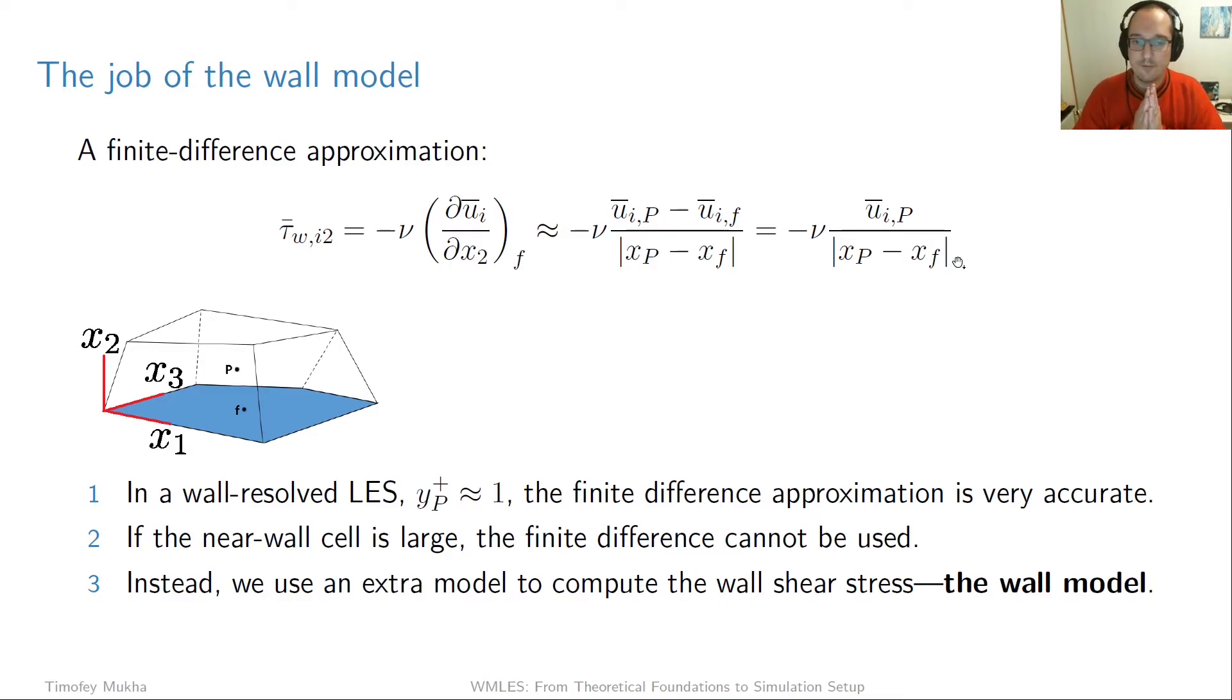So this works great when you're doing a conventional wall resolved LES. Why? Because then your grid is adapted to the inner length scales and the height of this first cell center should be approximately y plus 1. What that means is that you are in the region where there's actually a linear relationship between the wall shear stress and the velocity.